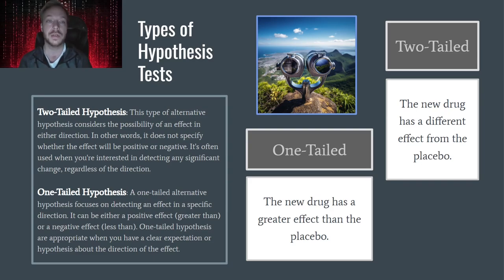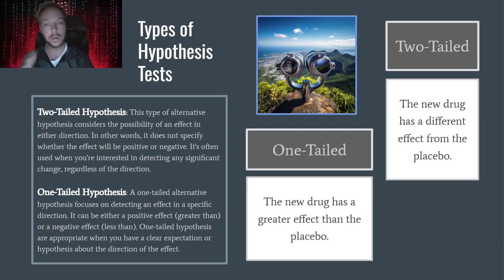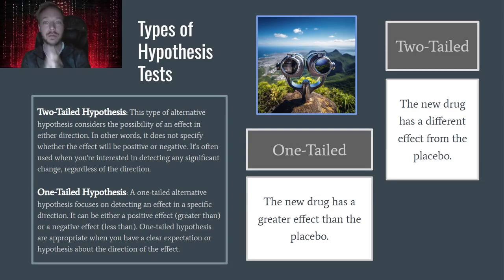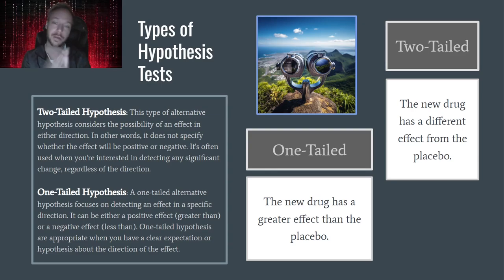With the two-tailed test, we're testing if something is different — so it can be above or below. A one-tailed test is more just a greater than or less than. So two-tailed is for 'different,' and one-tailed is for 'greater than or less than.'